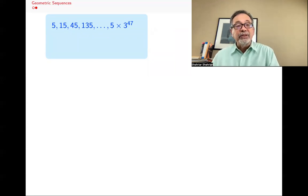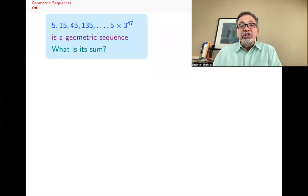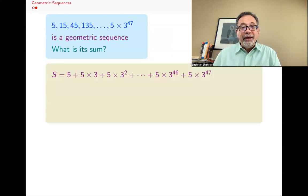And at the end, I have 5 × 3^47. So I've multiplied 47 threes along. And what I want to know is that this is a geometric sequence. I want to know what is its sum. Sum means adding them. Well, what do I get? And I don't want to just keep adding them. I want to find it in a better way.